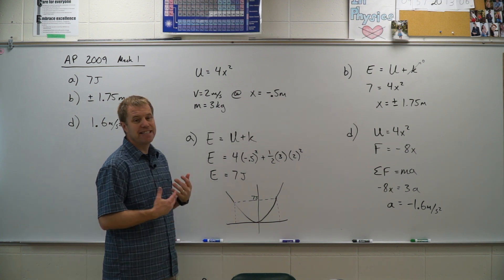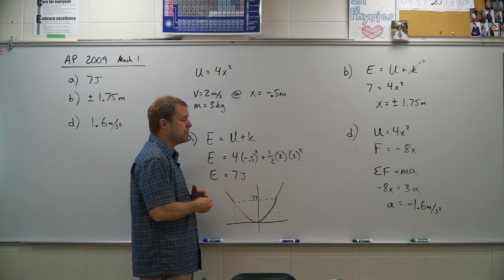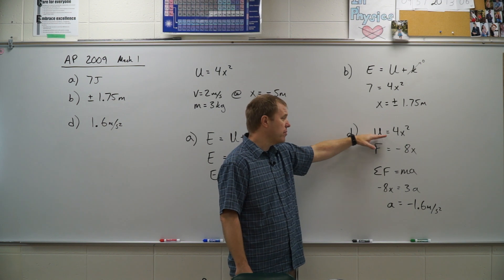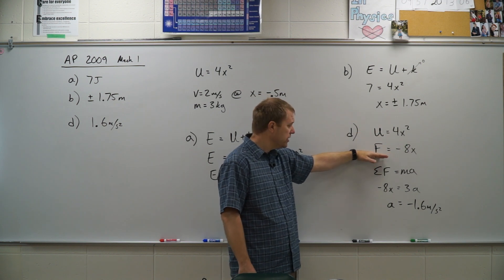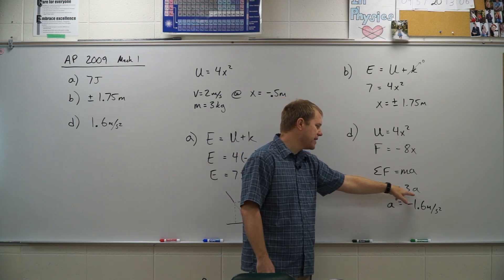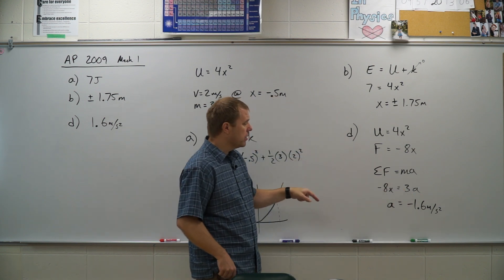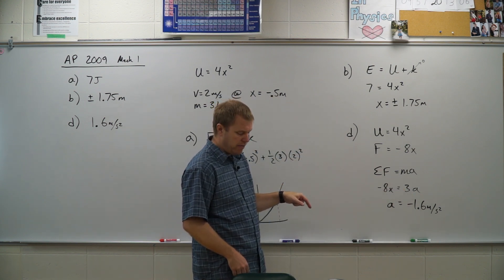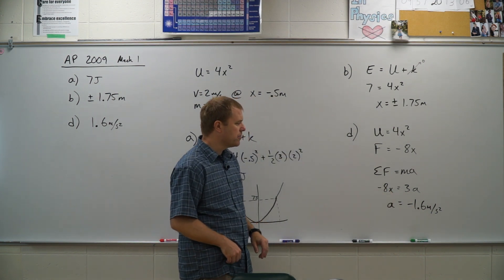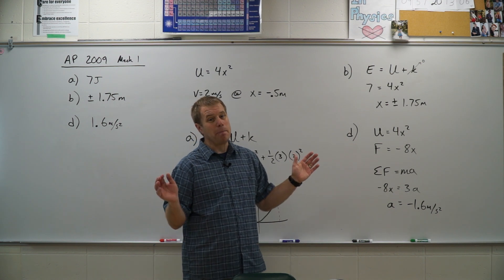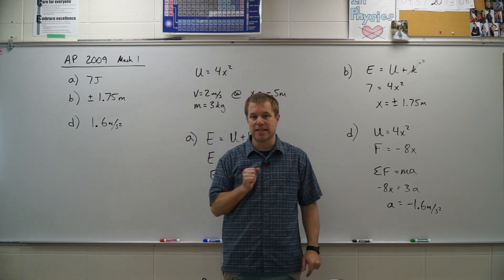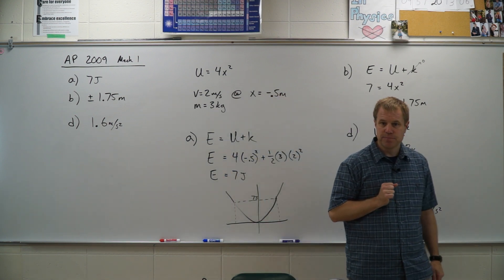Part D asks for the acceleration at a specific point. We take the potential energy function and take the negative derivative to get the force function. The sum of forces equals ma, so we have negative 8x equals 3a. Plugging in x equals 0.6, we get an acceleration of negative 1.6 meters per second squared. They asked for the magnitude, so the answer is positive 1.6. There you go.